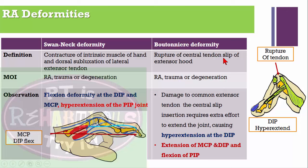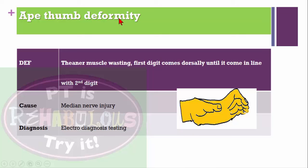Boutonniere deformity: rupture of the central tendon slip of the extensor hood. Mechanism includes rheumatoid arthritis, trauma, and degeneration. Due to damage to the central extensor tendon, extra effort is required to extend the joint, causing hyperextension of the distal interphalangeal joint, extension of the metacarpophalangeal joint, and flexion of the proximal interphalangeal joint.